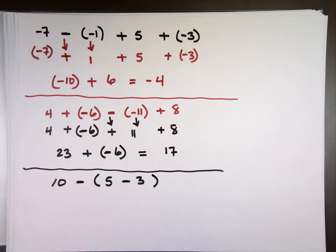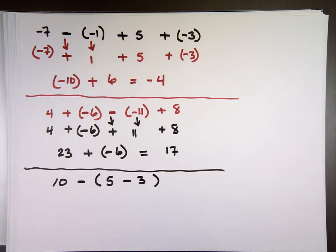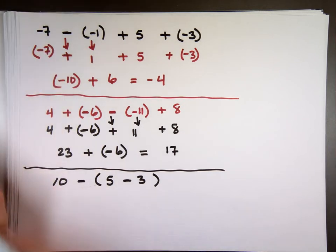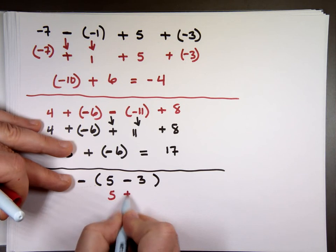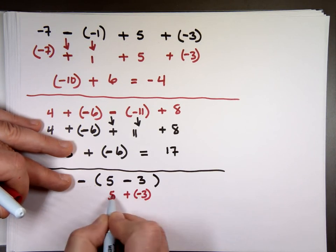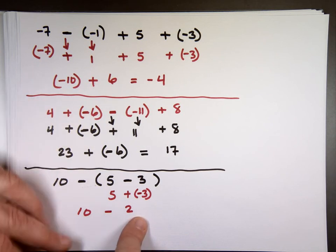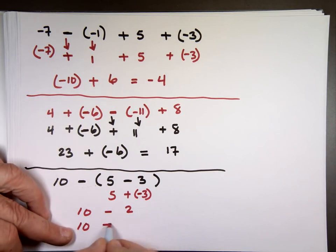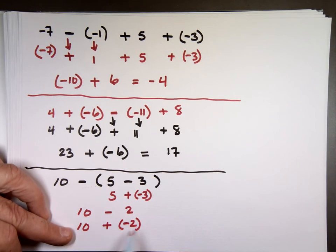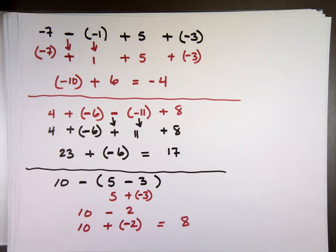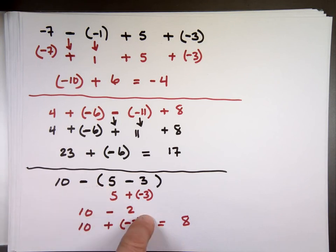If you were doing this problem, which step would you do first? 5 minus 3 — order of operations, PEMDAS. Do the 5 minus 3 first — write that as 5 plus negative 3. Subtract 3 from 5: that's 2, and it's positive. So you end up with 10 minus 2. What's 10 minus 2? That's 8, or 10 plus negative 2. Different signs: subtract 2 from 10, which is 8, and the sign is positive. So if you have parentheses, you do what's inside the parentheses first, get an answer, then the problem becomes 10 minus that answer — 10 minus 2 is 8.